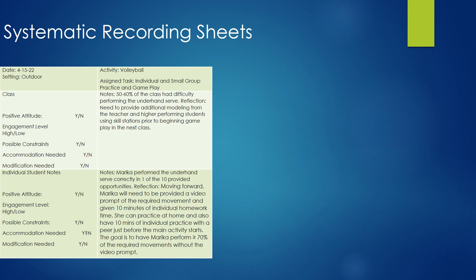We can use systematic recording sheets. For example, a volleyball recording sheet with individual and small group practice and gameplay looks at whether the class has a positive attitude, their engagement level, possible constraints — individual, environmental, or task — and what accommodations or modifications might be needed. The same format applies for individual students. Because of those notes, we've been very specific about what we observe and we're identifying behaviors the student needs to improve on.